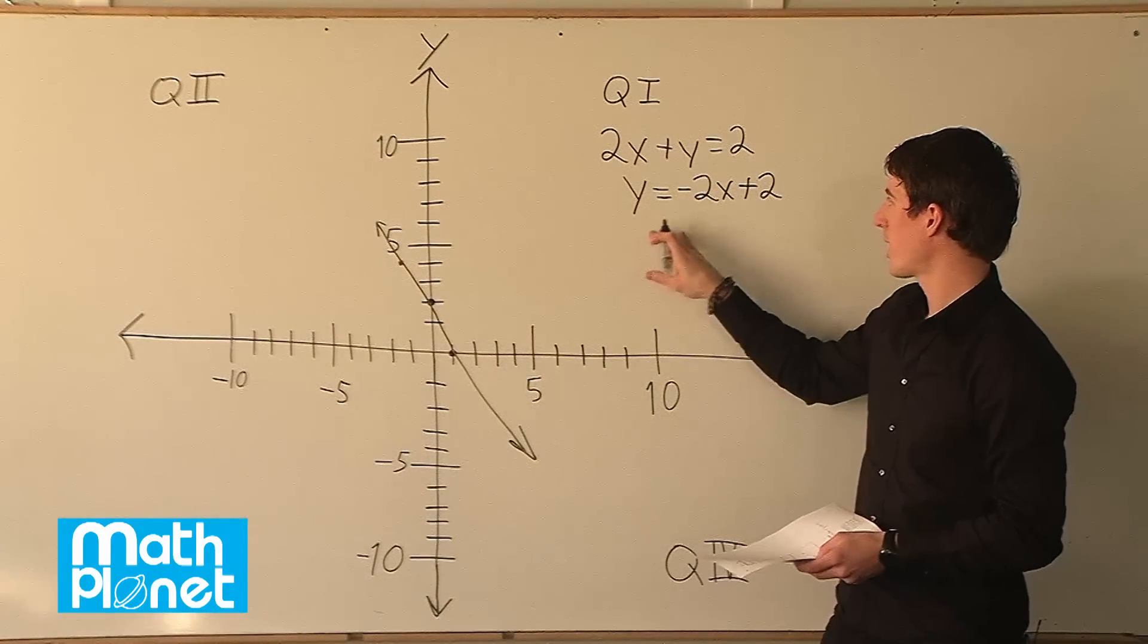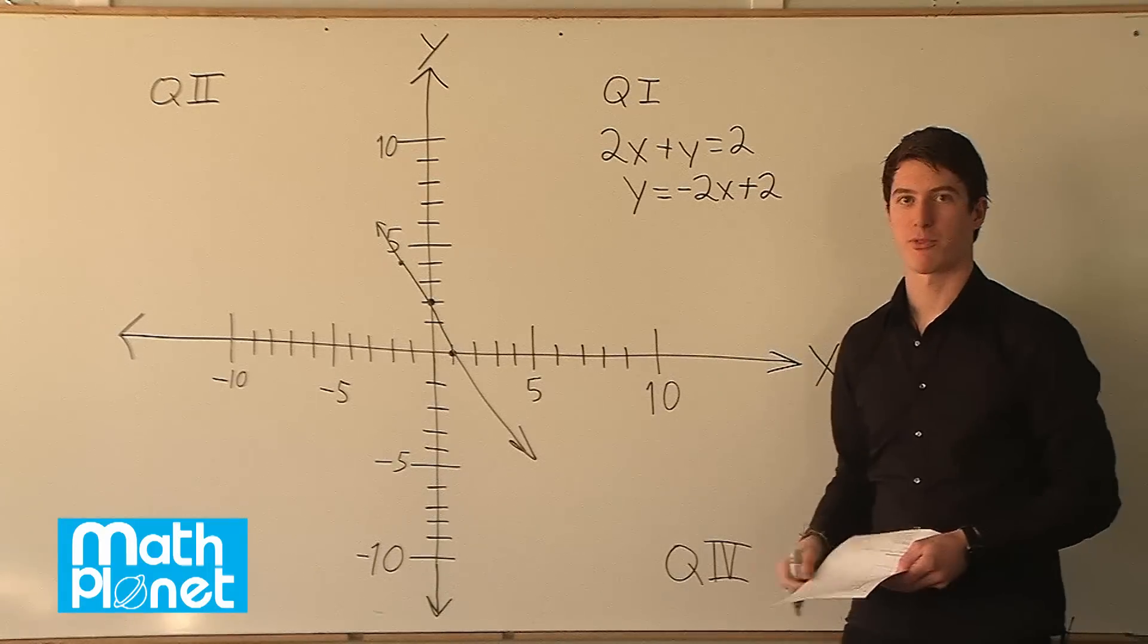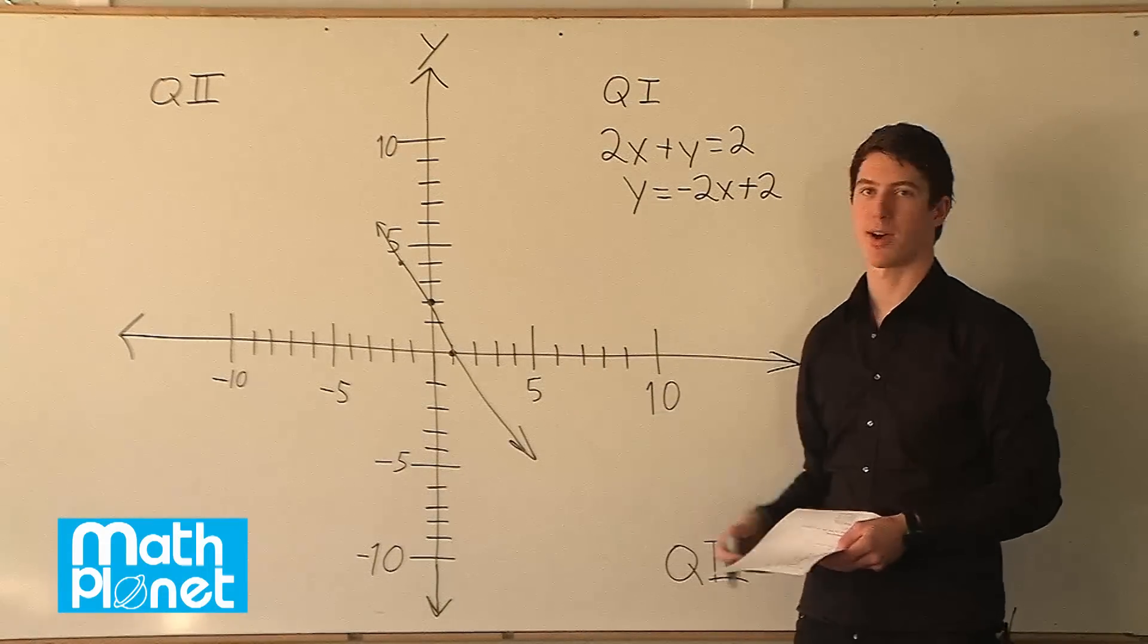So this is great. We have y equals negative 2x plus 2 written in the slope intercept form and we can graph it by just picking any values of x that we want.